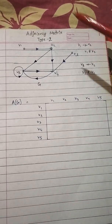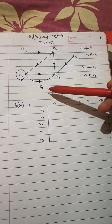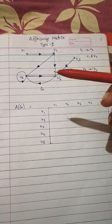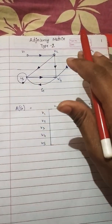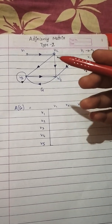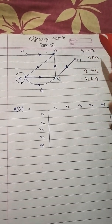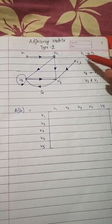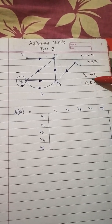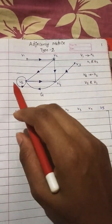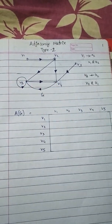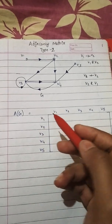In this video I'm going to explain how to represent a graph in terms of an adjacency matrix. In the previous video, type 1 adjacency matrix, I explained how to represent a simple undirected graph as a matrix. In this video I'm going to explain how to represent a digraph — a directed graph — as a matrix. Keep two points in mind: V1 → V2 means V1 is related to V2, not the reverse. A circular arrow means a vertex is related to itself, as with V5.